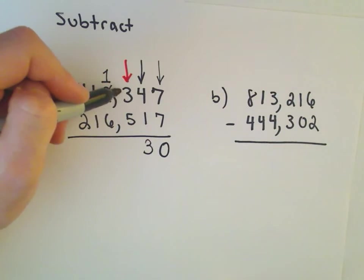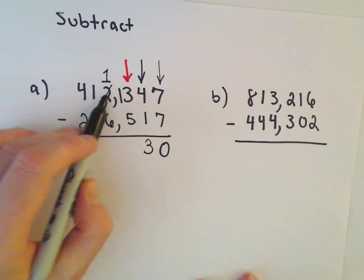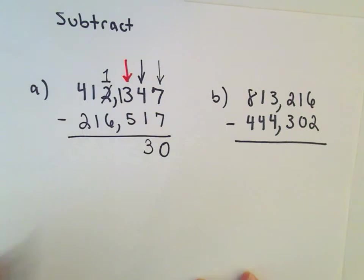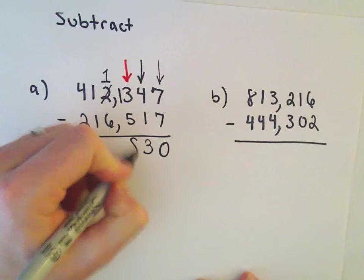I'm going to now pretend this is a 13. So I'm borrowing one digit from that next column. So 13 minus 5, we can do that. That's going to leave us with 8.